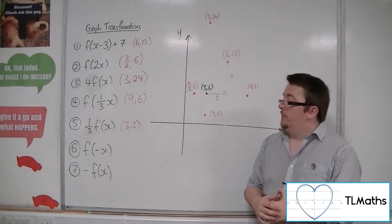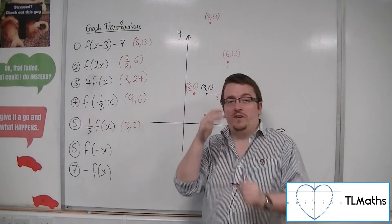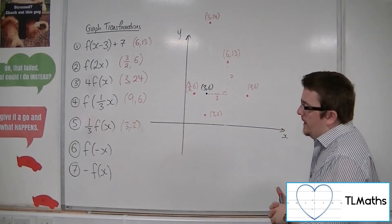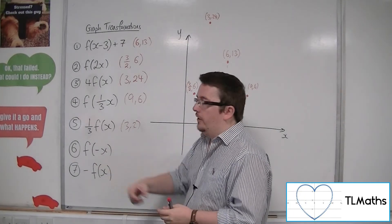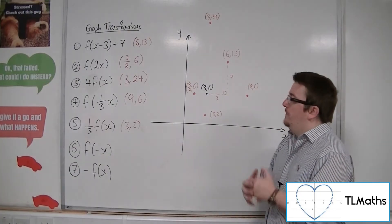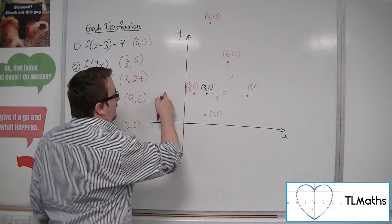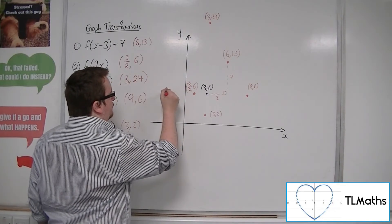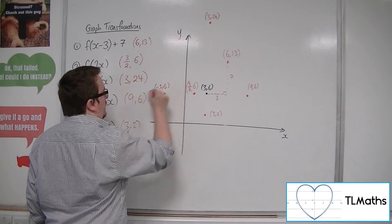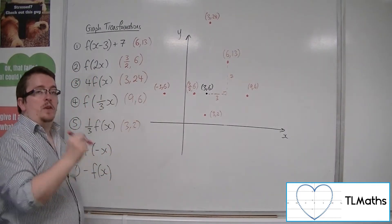Now we've got number 6. Now, because we've got the minus sign involved, it's definitely going to be a reflection. The x coordinate inside is changing sign. So if the x coordinate is changing sign, then 3, 6 will become -3, 6. So that is a reflection in the y-axis.